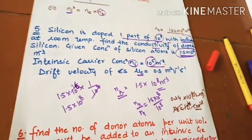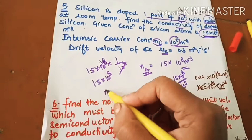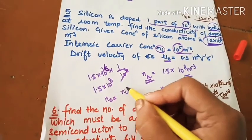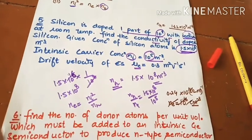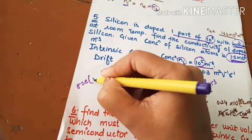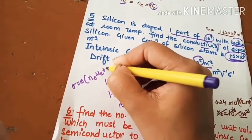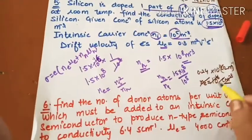Using the formula Ni square is equal to Ne Nh, you can find Ne. Then use sigma equals e times Ne mu e plus Nh mu h. Put the values to find the answer.